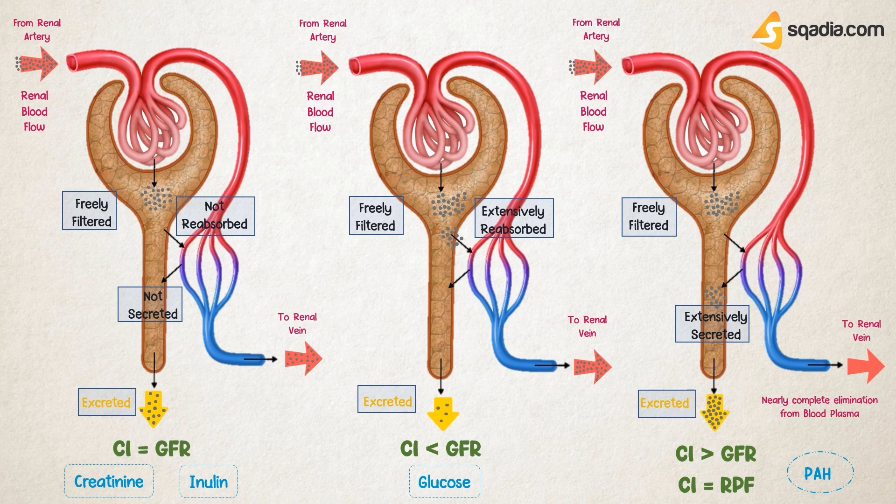Renal clearance is also used to describe important parameters of kidney function that help assess how well the kidneys are functioning, which include the glomerular filtration rate and renal plasma flow.